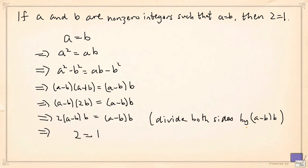But why can't we do this? Normally, we can divide both sides of an equation by a non-zero value. But here, this is 0 because a is equal to b.